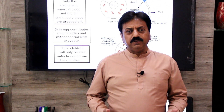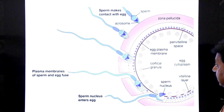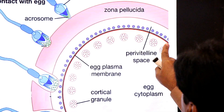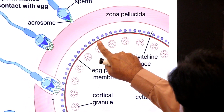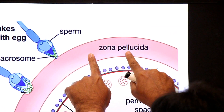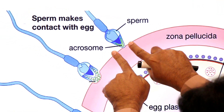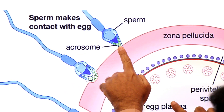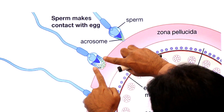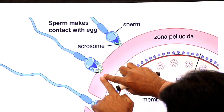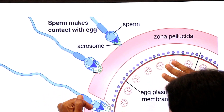This diagram shows fertilization. The egg has a plasma membrane surrounded by a glycoprotein layer called zona pellucida. The sperm has a special lysosome in the head known as the acrosome. The acrosome releases enzymes that digest the zona pellucida, allowing the sperm to penetrate the egg.